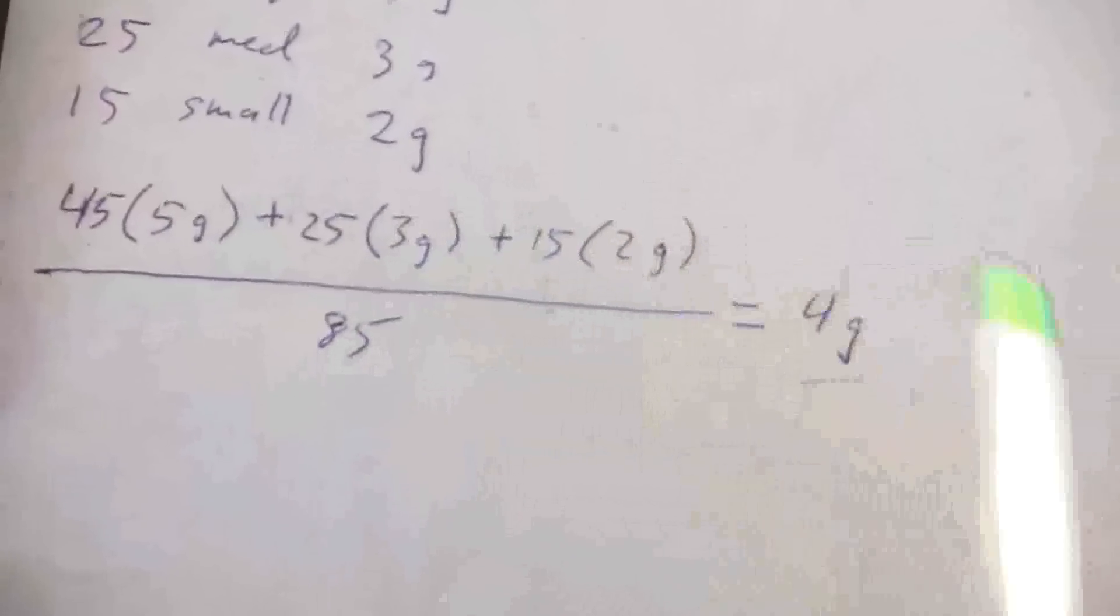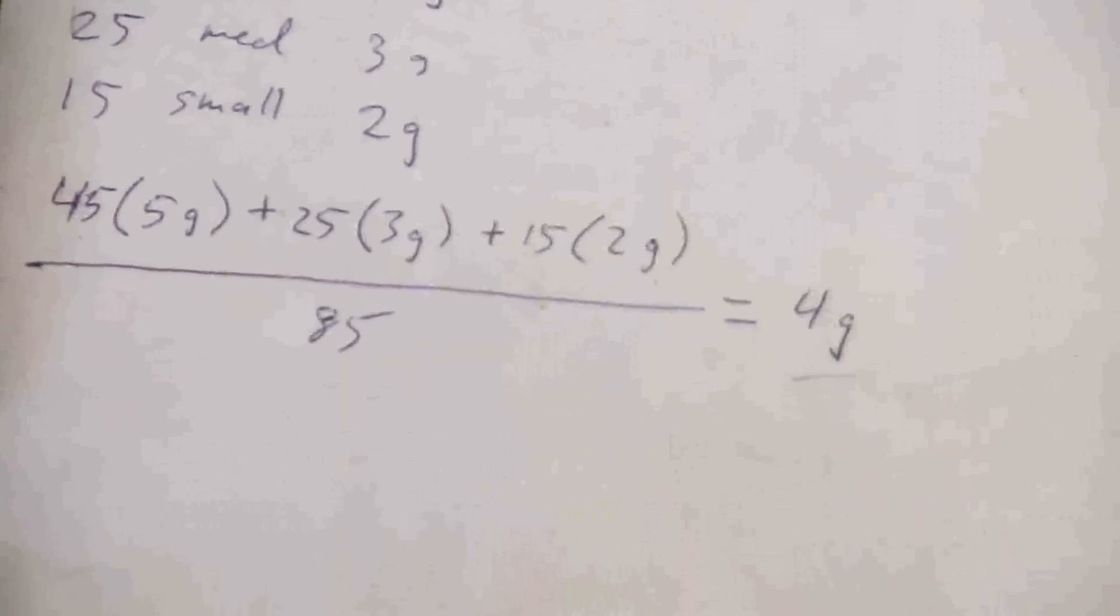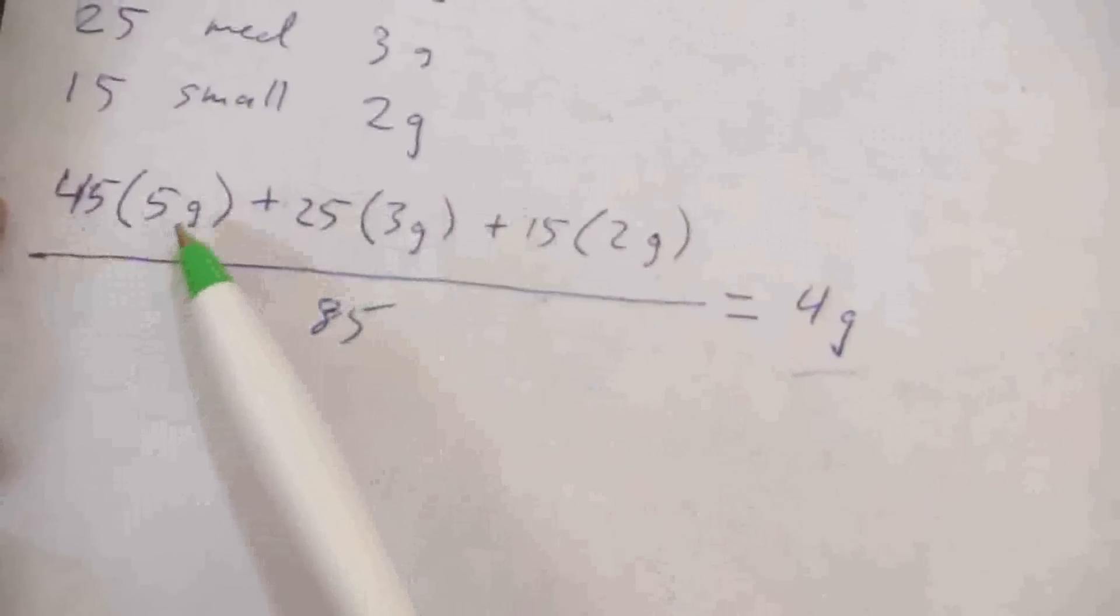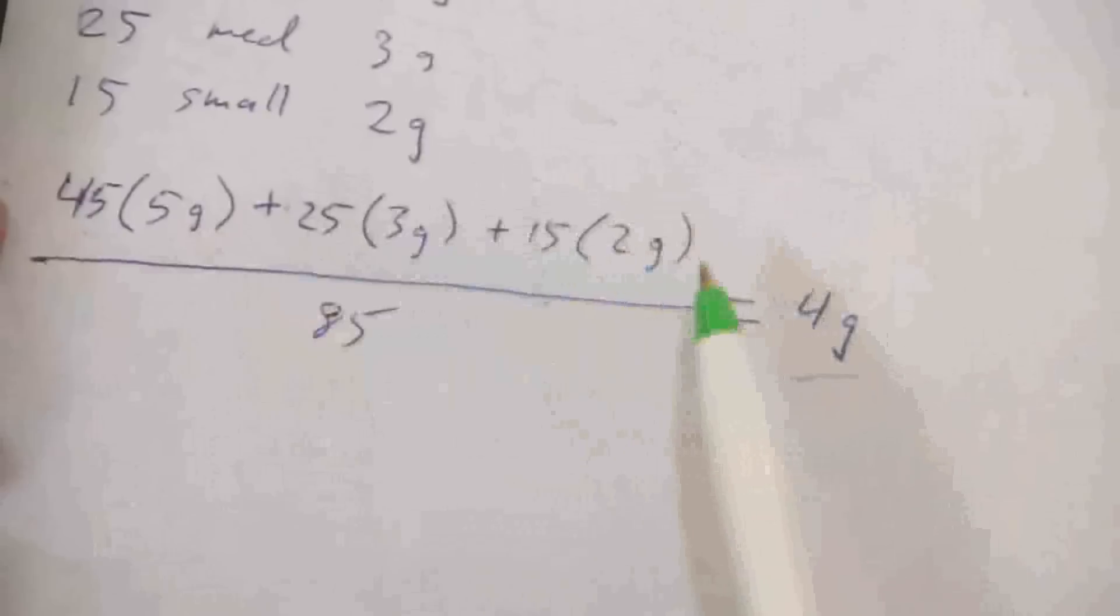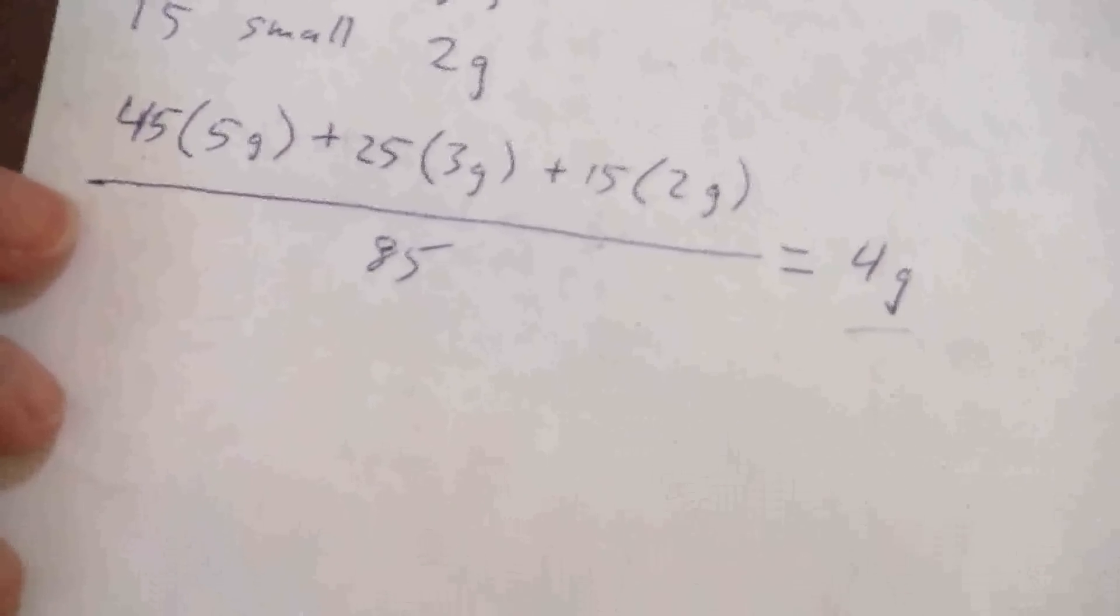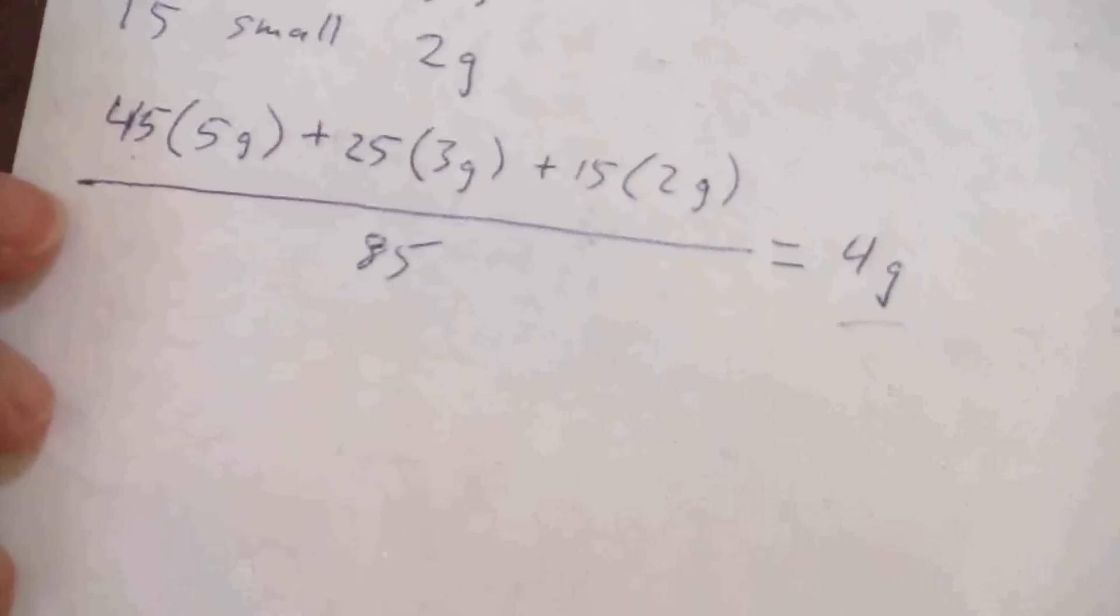25 of the 3-gram, 15 of the 2-gram, and these are the weights for each of those, the mathematical weights for each of those physical weights. So that's all that a weighted average is.